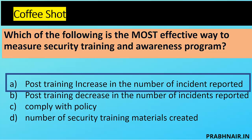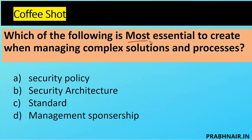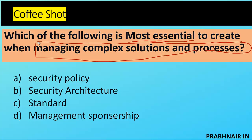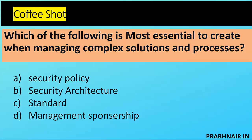Question: which of the following is most essential to create when managing a complex solution and process? Policy is a high-level statement — it is management's intent, not suited to manage operational complexity. Security architecture makes sense because it is a framework used to organize and manage all the building blocks. Standard is a tool for implementing requirements. Management sponsorship is important for budget approval, but the question asks what is essential to create for complex solutions operationally. The answer is B — security architecture.